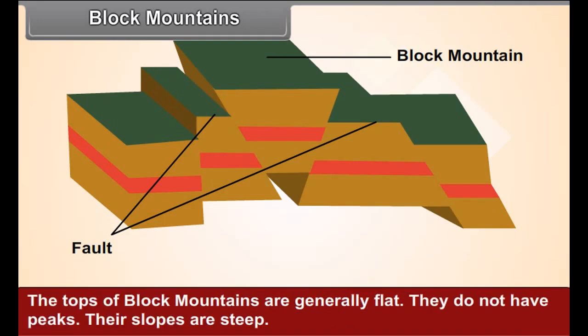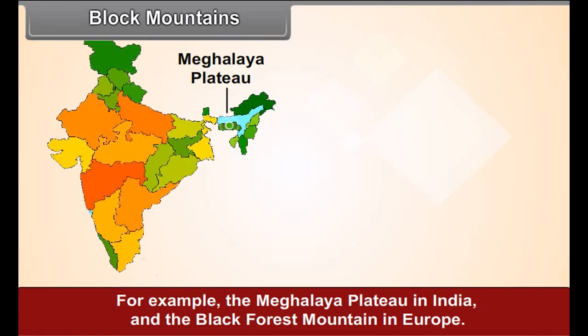The tops of block mountains are generally flat. They do not have peaks. Their slopes are steep. For example, the Meghalaya Plateau in India and the Black Forest Mountain in Europe.